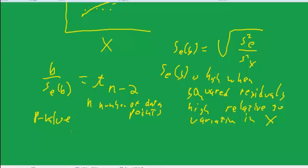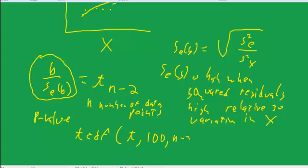The p-value comes from taking tcdf from the t-value that we calculate here - the ratio of b to the standard error is called the t-value - to some big number, we can put 100, with the number of degrees of freedom, n - 2.